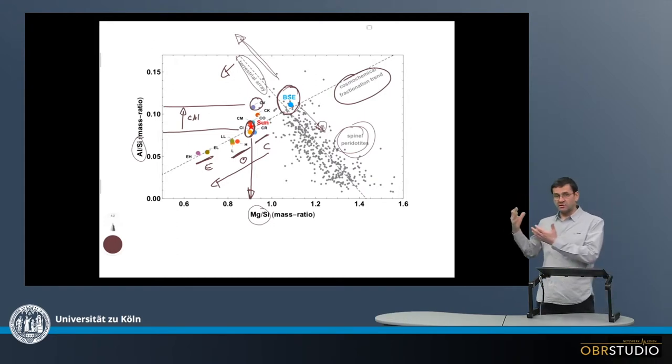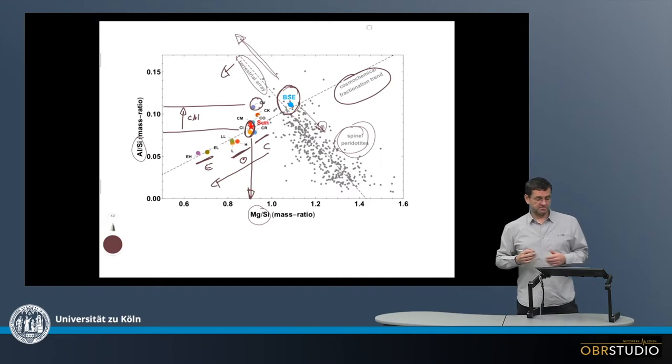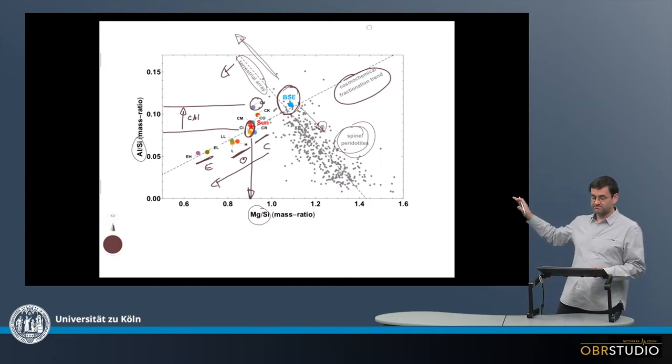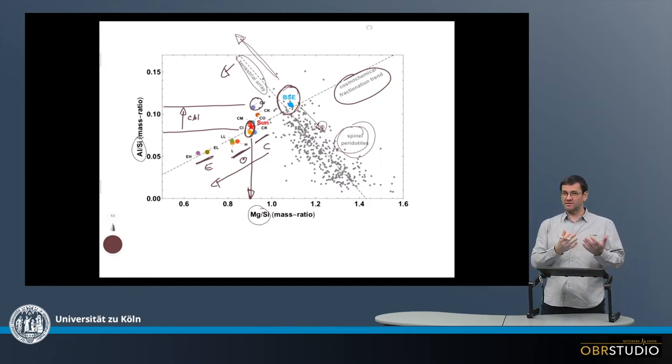And so these are all the implications, these are all the things that we can learn from this plot. So we see a correlation in the chondrites, and know there must have been some additional removal of magnesium and or silicon, which we don't really know yet.